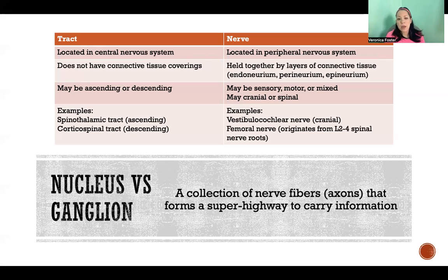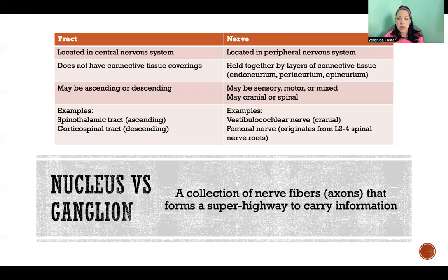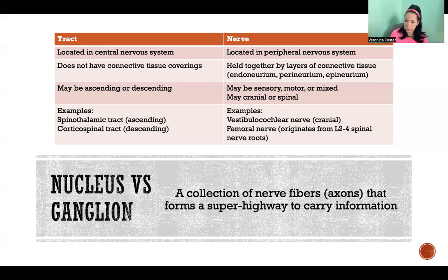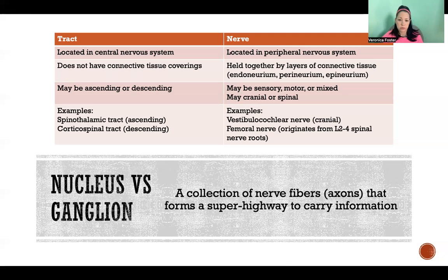Tracts may be ascending or descending, which refers to whether that tract — that superhighway — is going towards the brain or away from the brain. Nerves are categorized as sensory, motor, or mixed, meaning the nerve carries sensory information from the periphery up to the CNS, or motor information from the CNS to the periphery, or both, which is a mixed nerve.